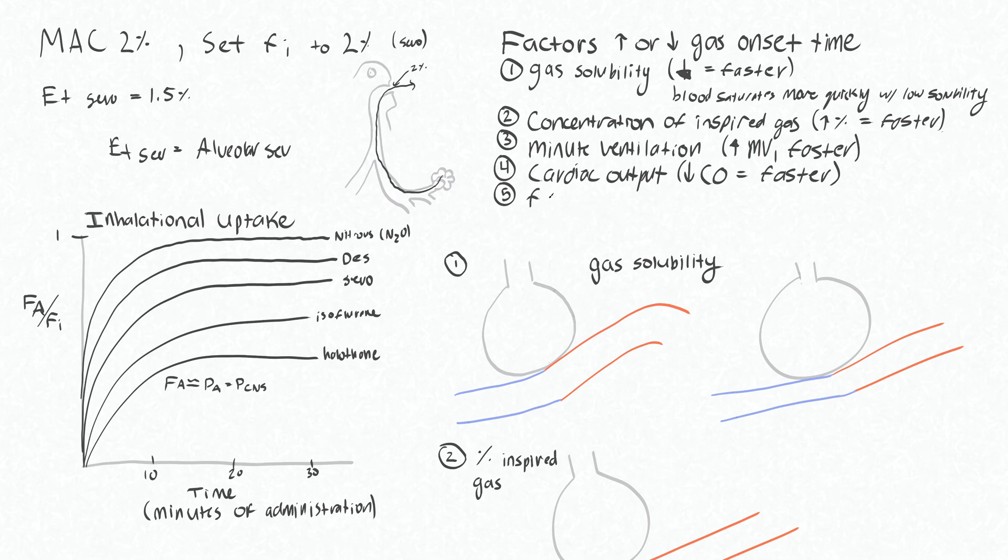And lastly, fresh gas flow from your anesthetic machine. So increasing your fresh gas flow will make for faster onset. I'm not going to talk about the mechanism behind this more than just to say that this is to maintain the concentration of the gas in your circuit. So you actually have to think about how much gas is coming out of your vaporizer and is available to the patient circulating through the circuit. So increasing your fresh gas flow will maintain that concentration.